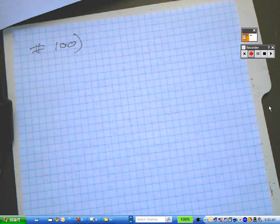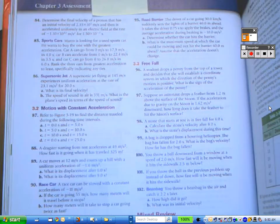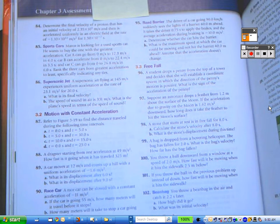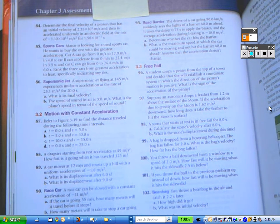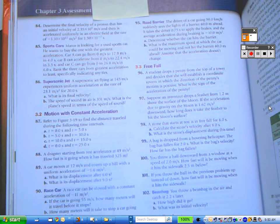So randomly, I chose number 100 from chapter 3 and we'll be in chapter 3 relatively soon in the year. Let me show you what number 100 is. You look in your textbook, you'll see number 100 says this: You throw a ball downward from a window at a speed of 2.0 meters per second. How fast will it be moving when it hits the sidewalk 2.5 meters below?